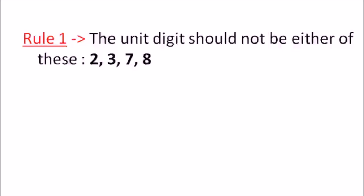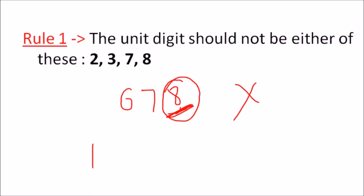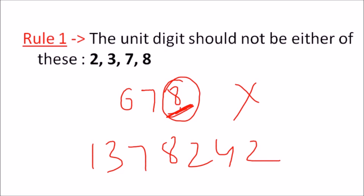For example, if I ask you: is 678 a perfect square? You would say no, because this number ends with 8. So we conclude it is not a perfect square. Similarly, is the number 1,378,242 a perfect square? No, because the last digit is 2, which means it does not satisfy Rule 1. So we conclude this number can never be a perfect square.